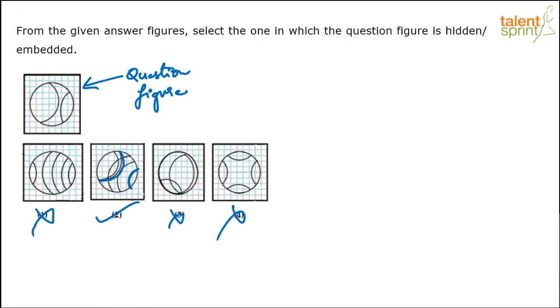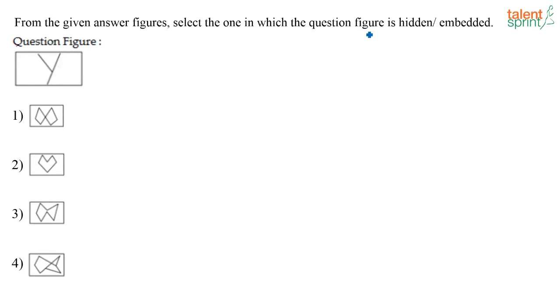From the answer figure, select the one in which the question figure is hidden or embedded. The shape should be there in the question figure which is here. See, this is the figure, this is the shape that they have given. You have to check in which of these options this shape is embedded. Is this Y shape embedded in this option? No, it's not there. Where can I find something like this, some lines like this? I cannot find. Similarly here I cannot find. Can I find here? Again, this is not Y, this is not the same shape.